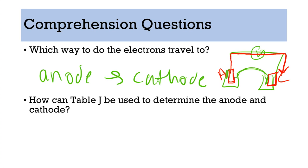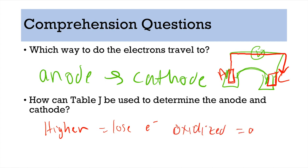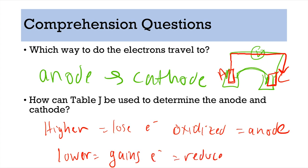Number eight: the higher element on Table J, because we're always looking at pairs — the higher one loses electrons, is oxidized, and is the anode. The lower one gains electrons, is reduced, and acts as the cathode.